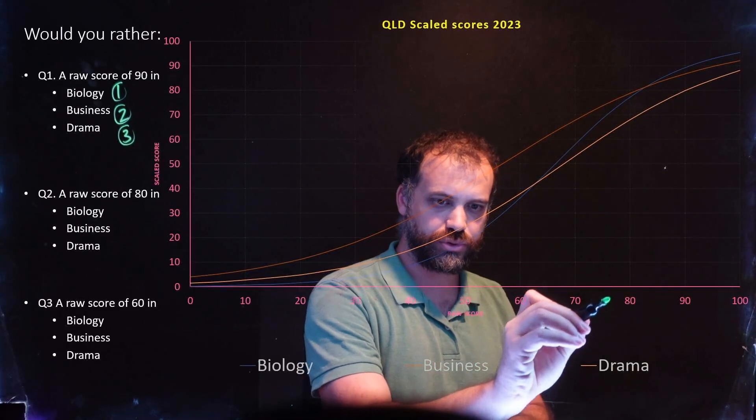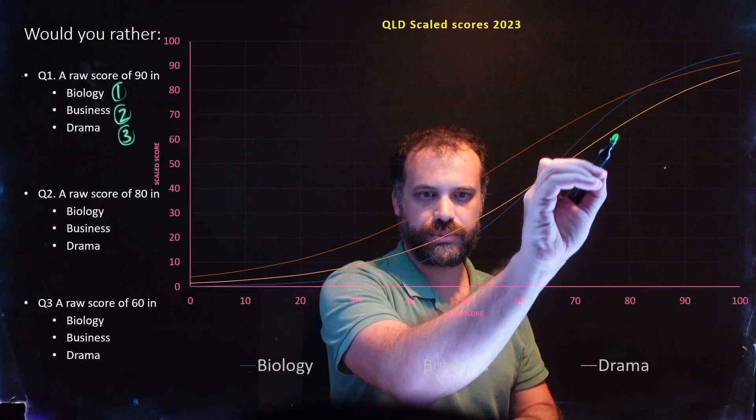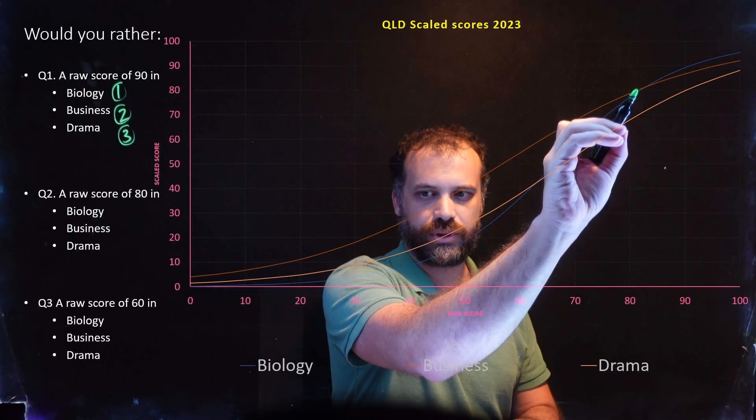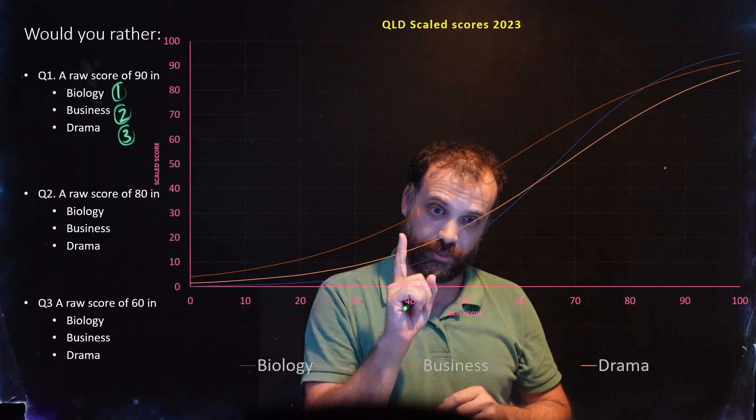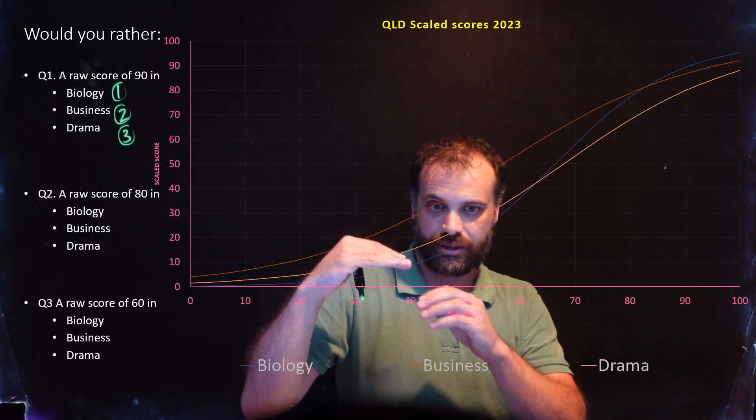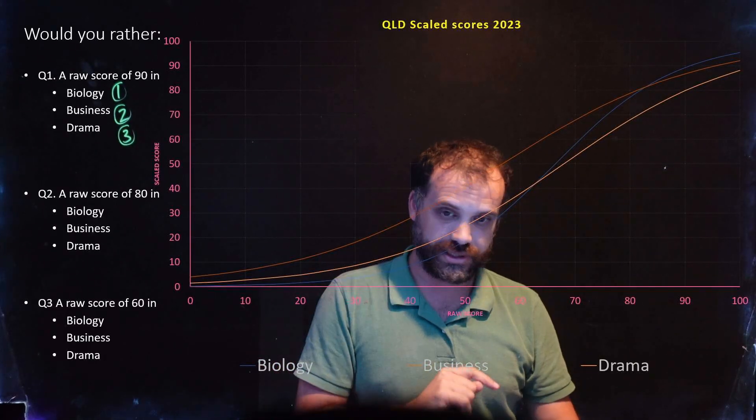But what happens when we're in the raw scores of 80? What happens when we go up to there? Well, now the business line is above biology, and biology is in between business and drama.